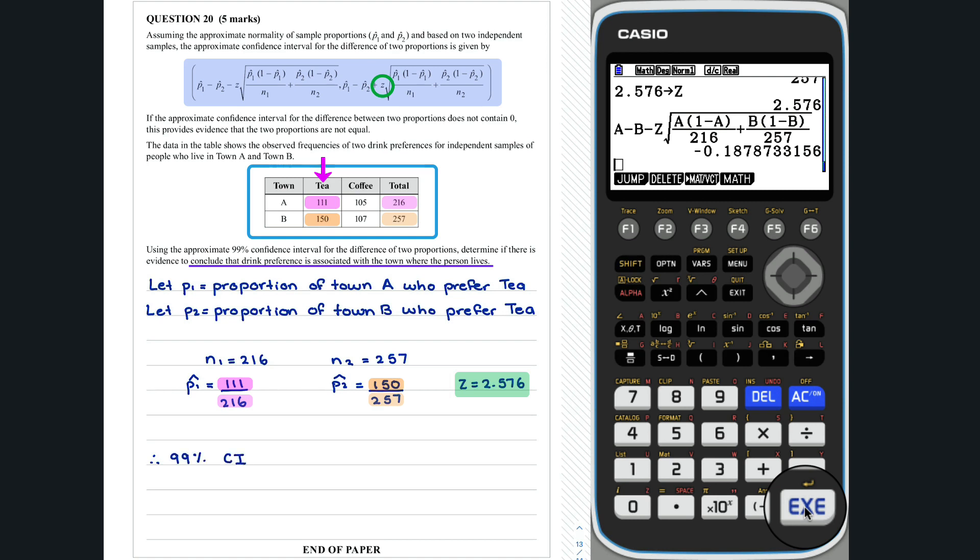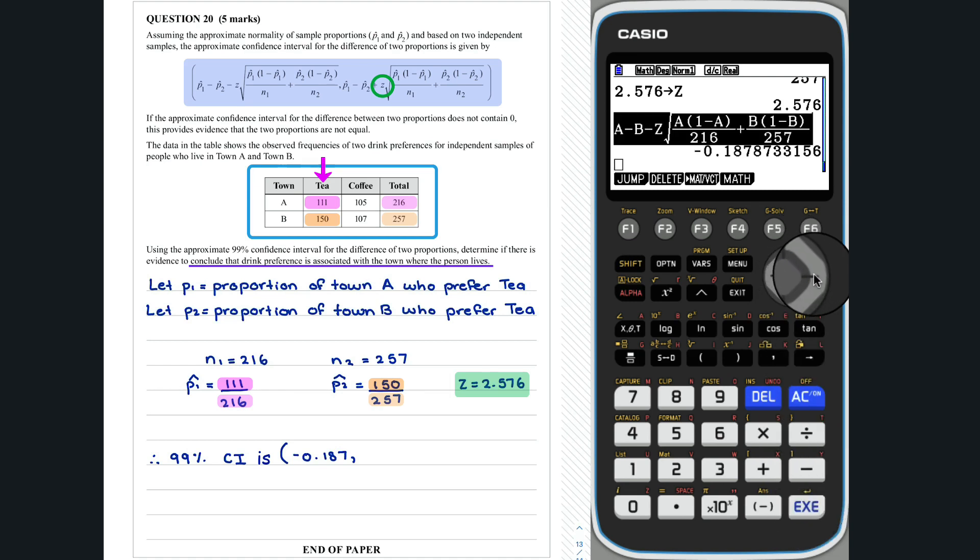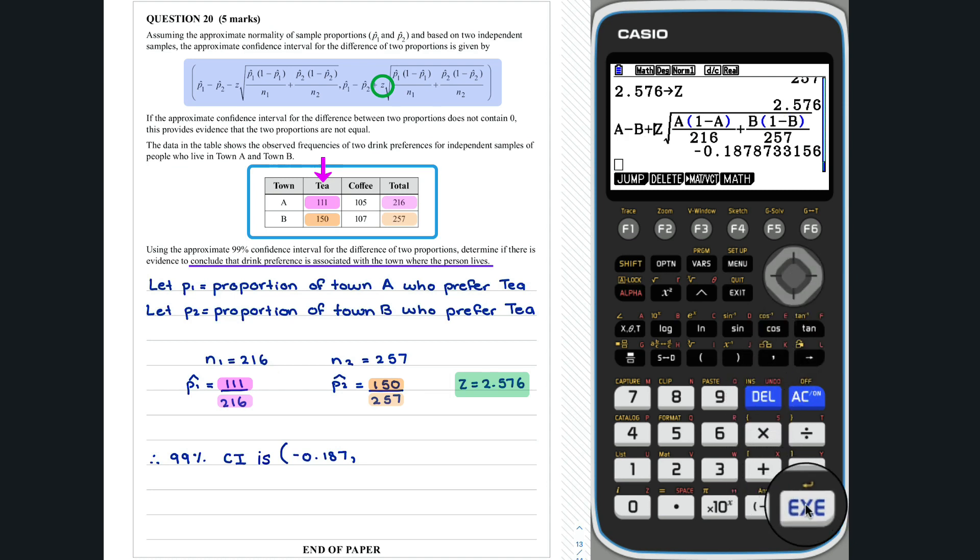So, the lower bound of our confidence interval is negative 0.187. Instead of re-entering our confidence interval to find the upper bound, we will simply edit what we have already entered and just change the second subtraction to an addition. Thus, the 99% confidence interval for the difference between P1 and P2 is from negative 0.187 to 0.0483.